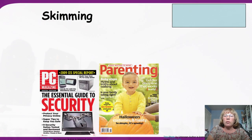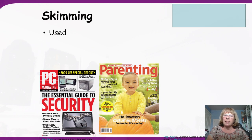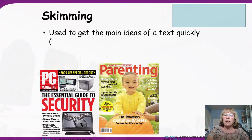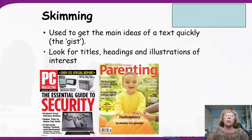To begin with, we're going to be using the skimming skill. What does that mean? Well, that's easy — it's what you do already. You use skimming to get the main ideas of a text quickly. We call this getting the gist of the information. It means that you're looking for titles, headings and illustrations — pictures of interest.